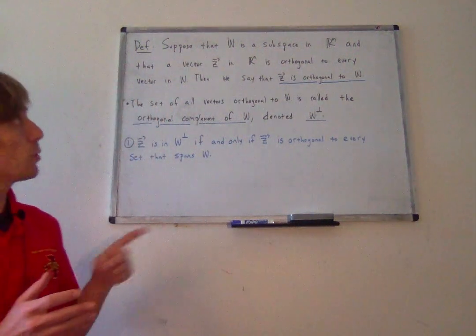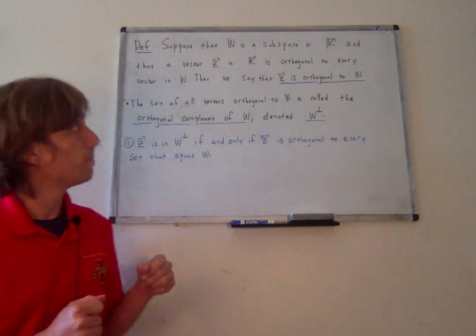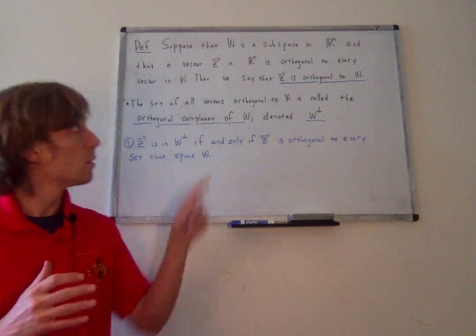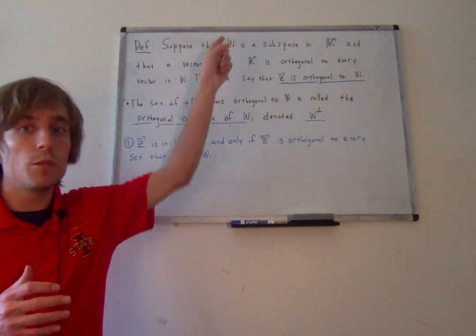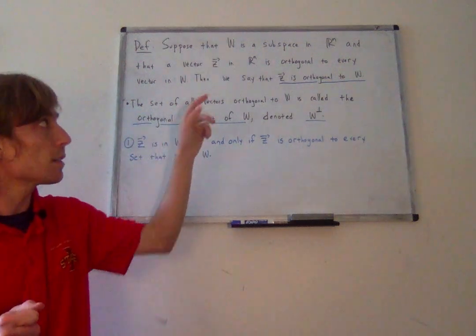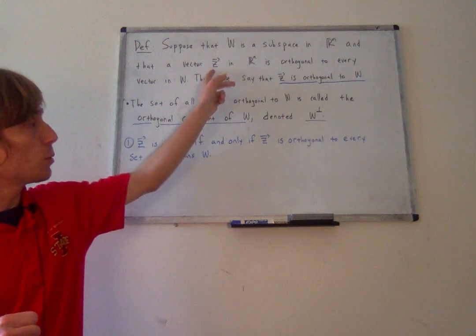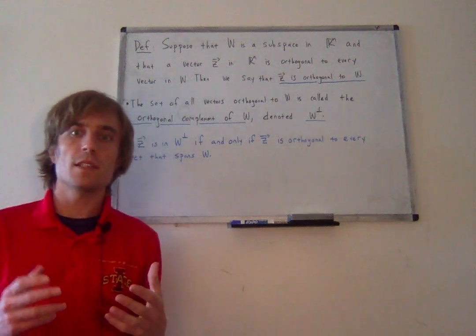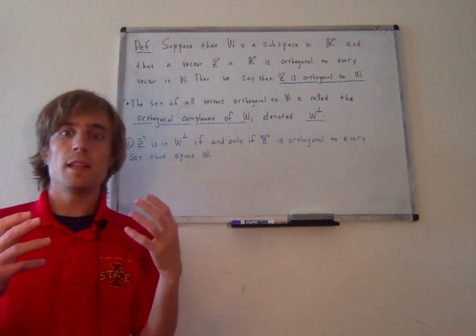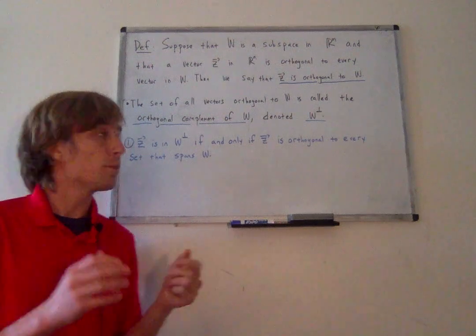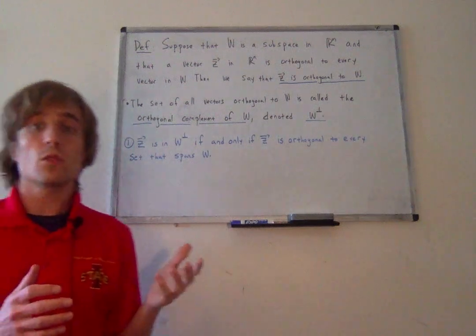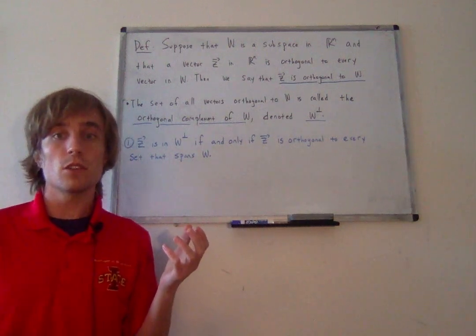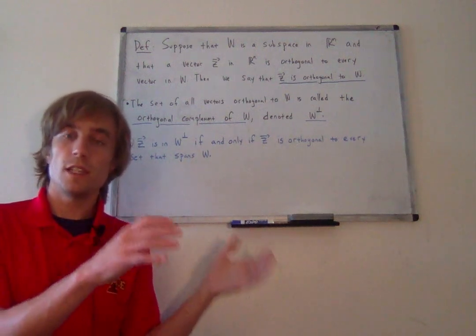Suppose that w is a subspace of R^n and that I've got a vector z in R^n — maybe in w, maybe not. So z doesn't necessarily have to be in w. And suppose z is orthogonal to every vector in w. Remember what that means is that the dot product of z and any vector in w is equal to zero. Then we say that z is orthogonal to w. So if a vector is orthogonal to a set, that means that that vector is orthogonal to every vector in the set.